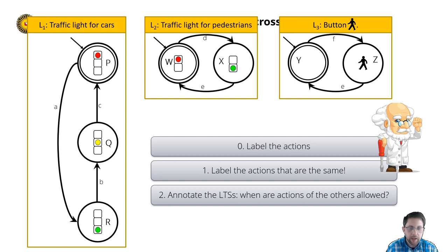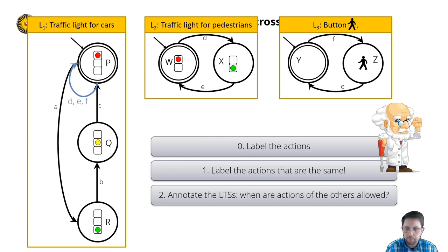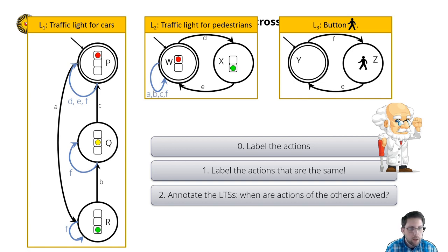Next, we need to annotate the states with the actions of the others — when do you allow the other actions if they are not shared, like action E? In state P, the traffic light of the pedestrian is allowed to change (actions D and E), and one can push the button (action F). So I add a self-loop with actions D, E, and F. In state R, we only allow the pushing of the button since otherwise it would be unsafe — so a self-loop with action F. Similarly for Q. In the pedestrian light, the car's light may cycle only if the light is red. Hence in state W, we add a self-loop with actions A, B, C, and also action F to allow the button to be pushed.